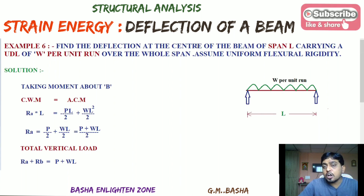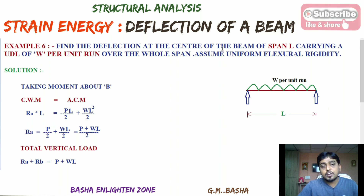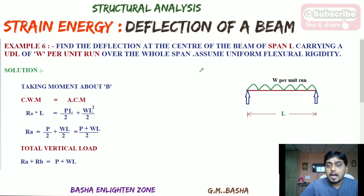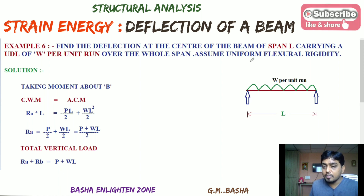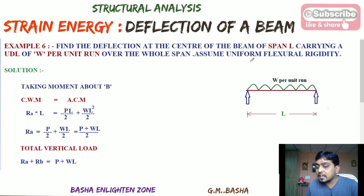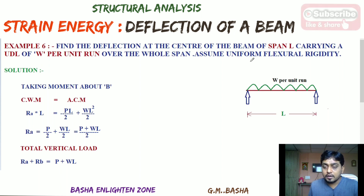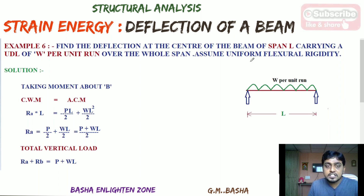Find the deflection at the center of a beam of span L carrying a uniform distributed load of W per unit run over the whole span. Assume uniform flexural rigidity. I already explained a similar uniform distributed load model based on a cantilever in the last lecture, but here this is a simply supported beam with UDL W per unit run over full span length L, and we are going to find the deflection at the center.